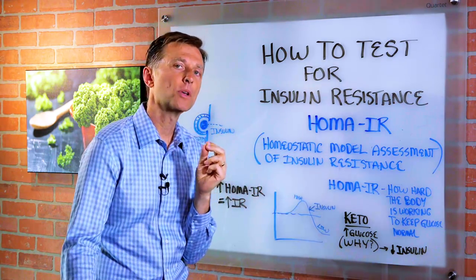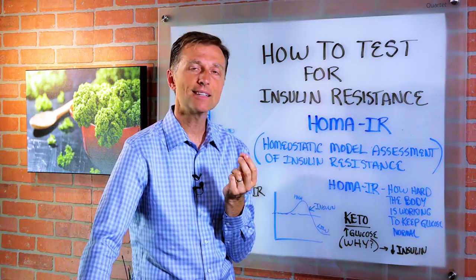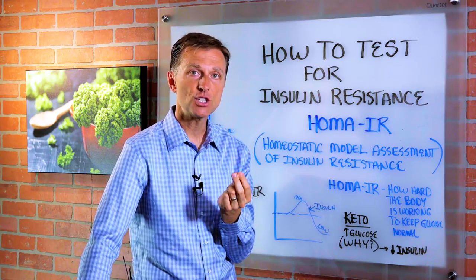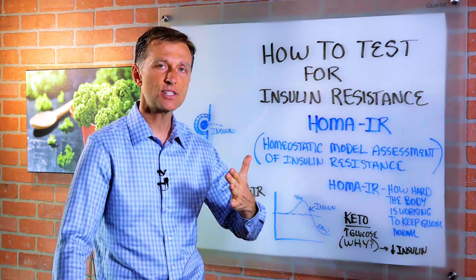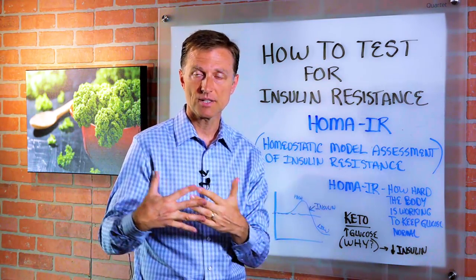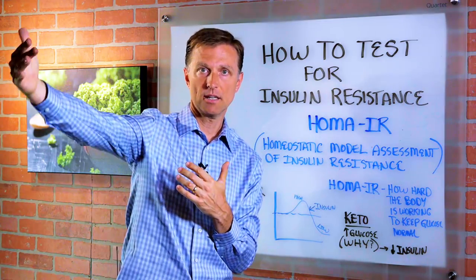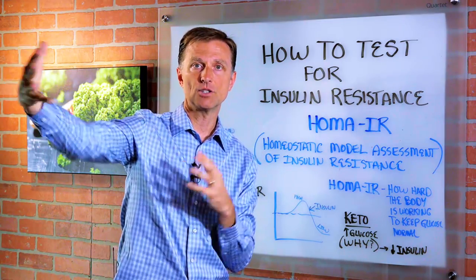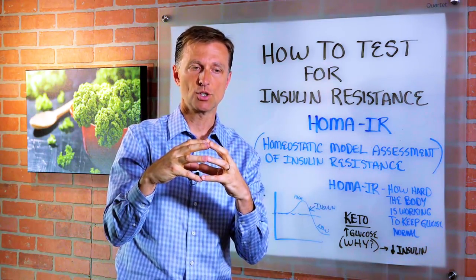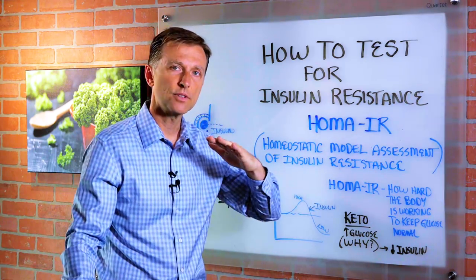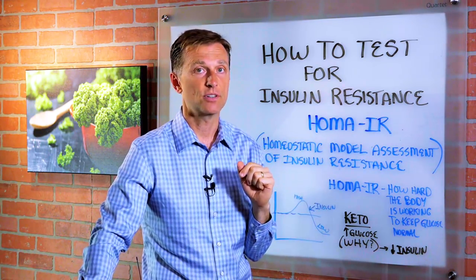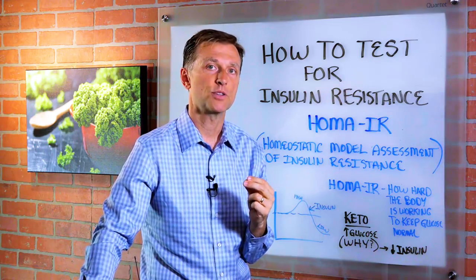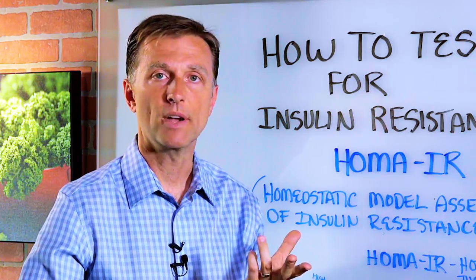Homeostatic comes from the word homeostasis, which basically means a condition whereby the body is adjusting its internal function based on the external environment to maintain a constant. Your body likes to keep things the same — like temperature at 98.6, blood pressure at 120 over 80, pulse rate at 72, blood sugars around 82.